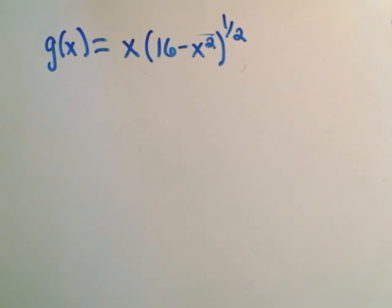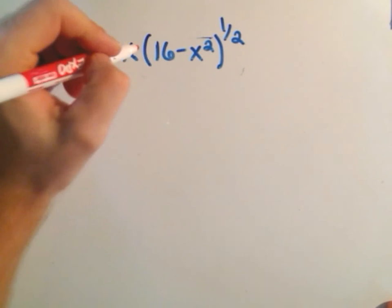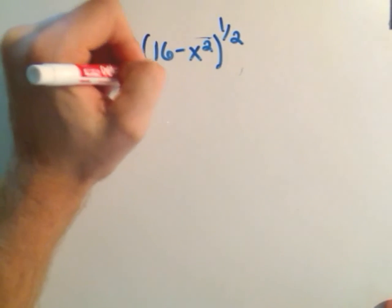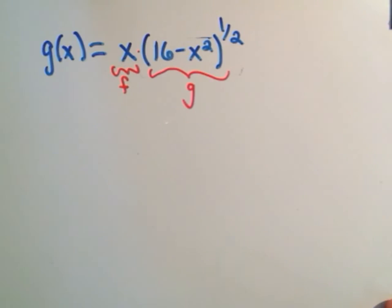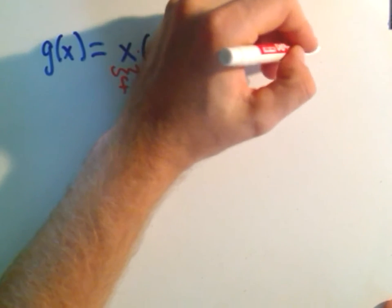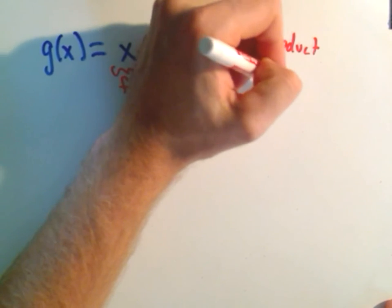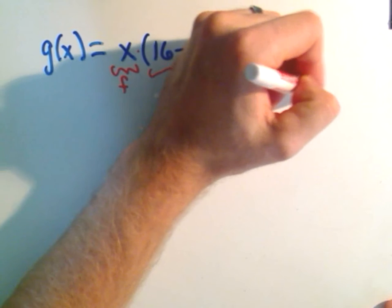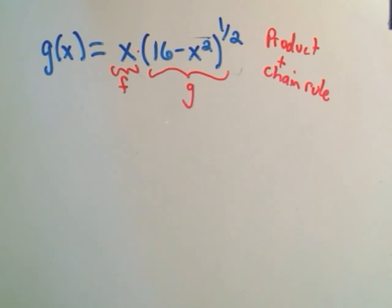I've got one piece we can call f, we can call the other one g, so we're going to have to use the product rule. But then when we take the derivative of the g piece, we'll also have to use the chain rule on that guy.